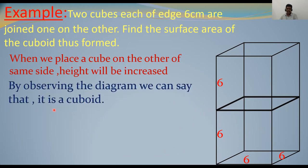By observing this diagram we can say that it is a cuboid — this is no longer a cube. These two cubes joined together make a cuboid. Why is it a cuboid? Length is 6 centimeters, breadth is 6 centimeters, but height is 6 plus 6 = 12 centimeters. That is why it is a cuboid. Let us solve the problem now.